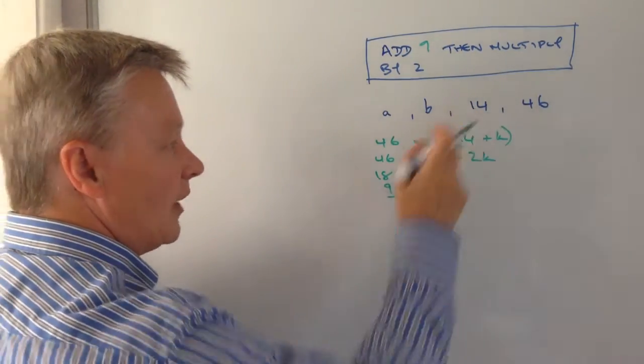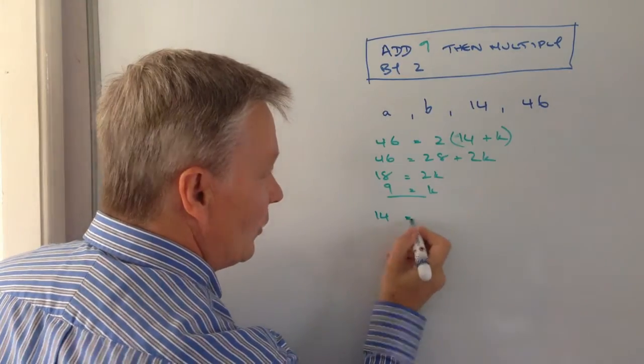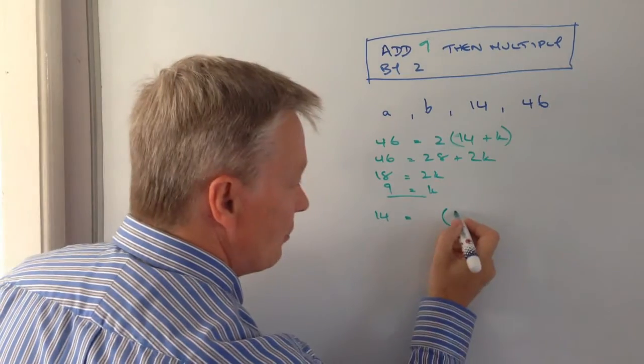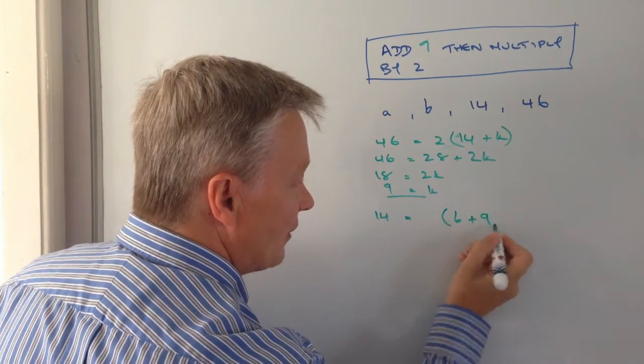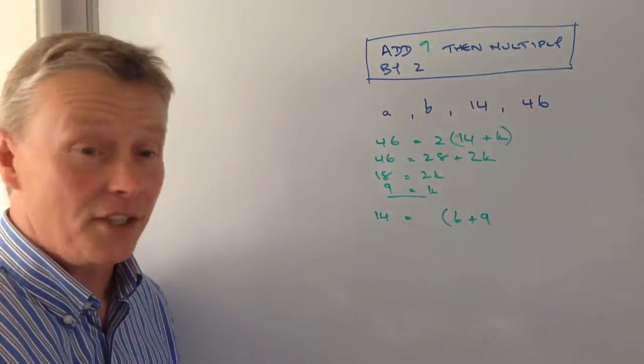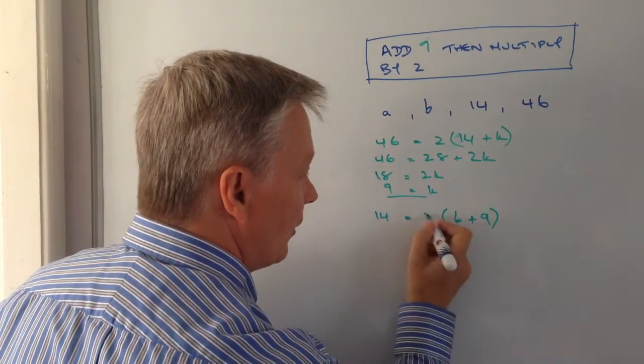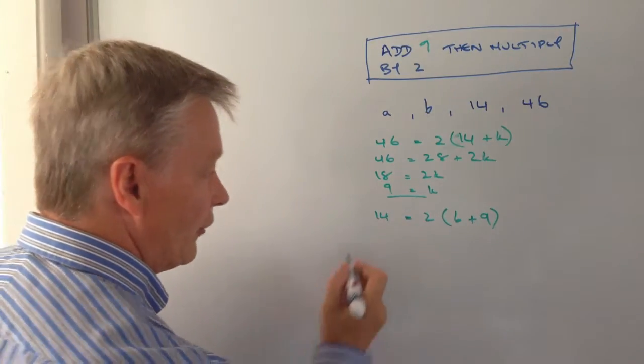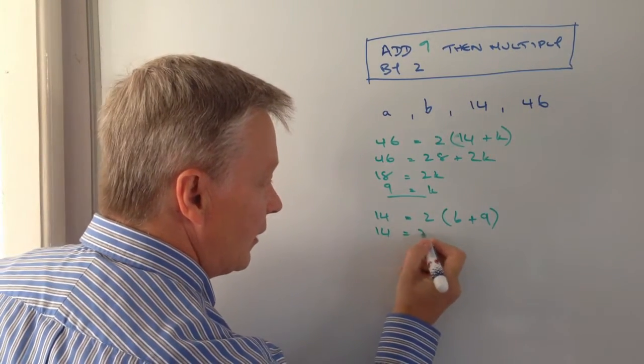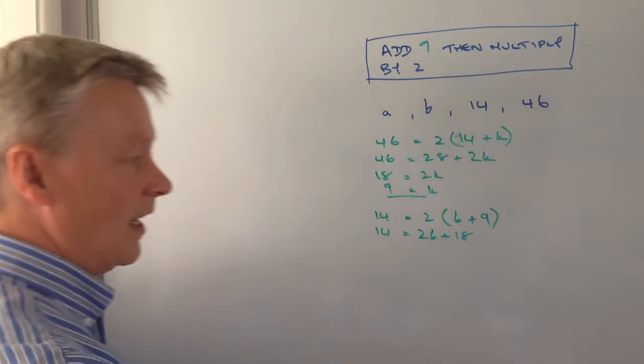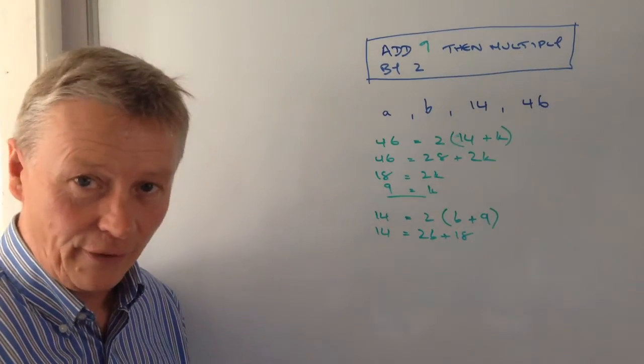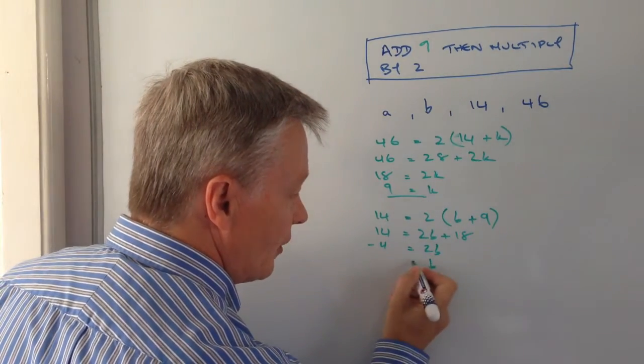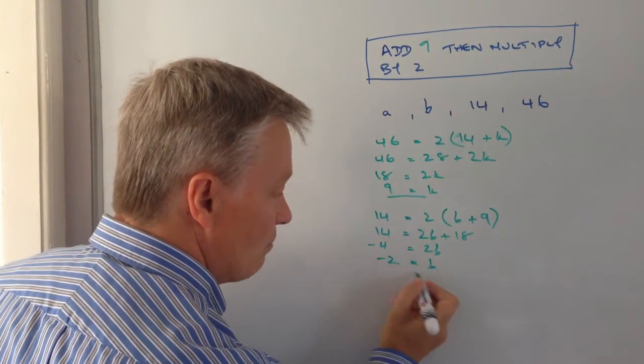So in order to generate 14, we do exactly the same. We're saying that we're going to take b, which is the previous term, add 9 to it, which is the value of k, and then we're going to multiply that through by 2. And then really it's just a case of expanding this and solving for b. So 14 equals 2b plus 18. If I take 18 away from both sides, I'm going to get minus 4 equals 2b. So therefore divide by 2 and b equals minus 2.